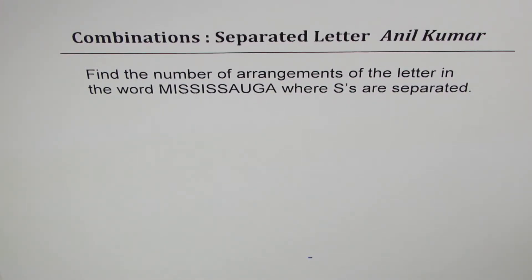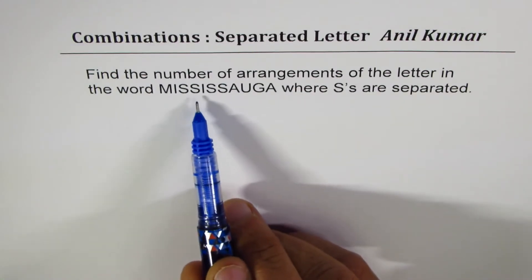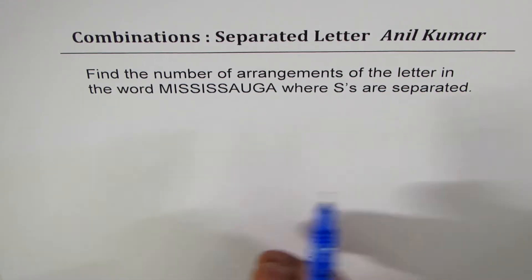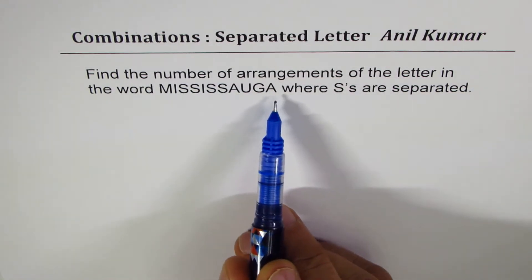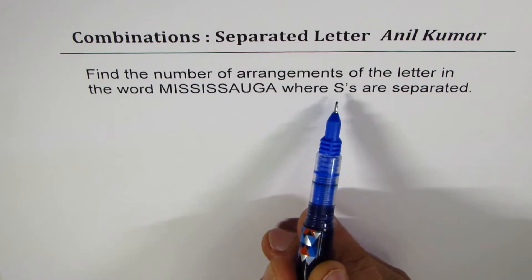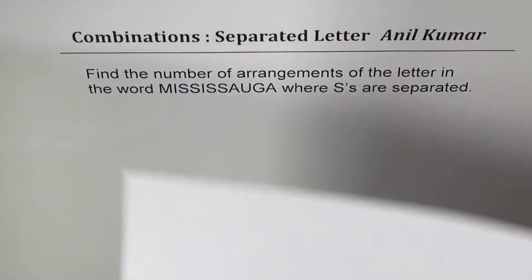I'm Adil Kumar, sharing with you a solution to a question from my subscriber Joseph. Let me first thank all subscribers for taking keen interest in posting brilliant questions. Now this one is excellent. The question is: find the number of arrangements of the letters in the word Mississauga (M-I-S-S-I-S-S-A-U-G-A) where the S's are separated. The student has tried many ways, and I'll build a concept to answer this properly.